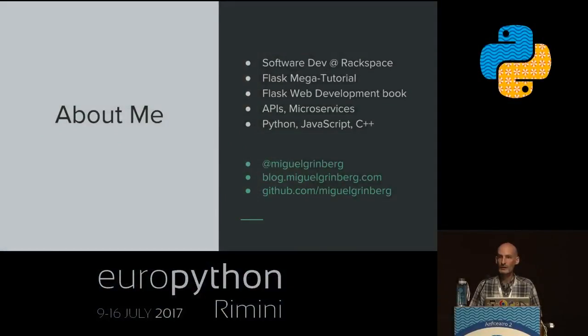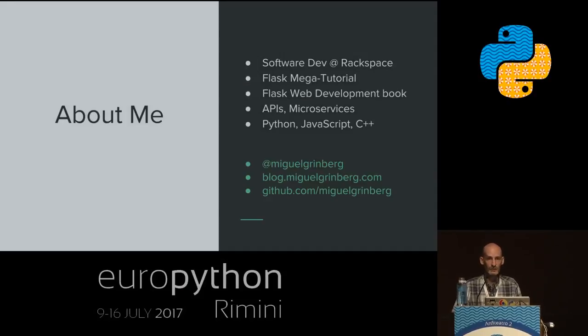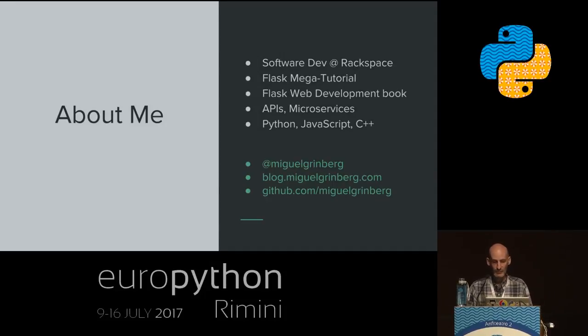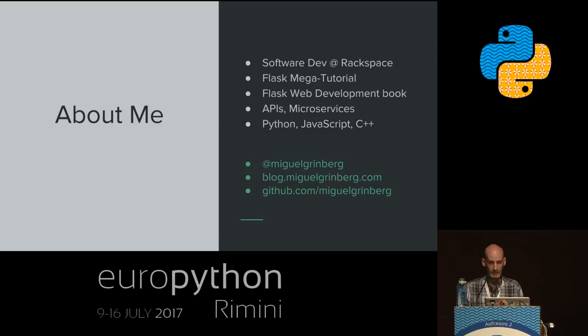Mostly these days I work on APIs and microservices. My language of choice is Python about 90% of the time, but sometimes I have no way to avoid writing JavaScript, so I do. In previous lives I used to work a lot with C++ as well. You have my Twitter, my blog which has a lot of articles about Python and in particular Flask, and my GitHub page where you can find a bunch of open source projects.